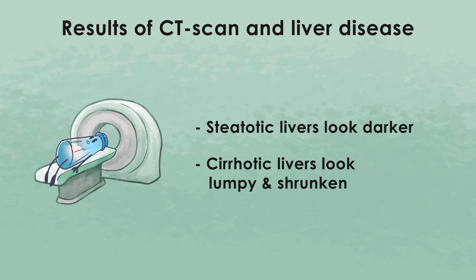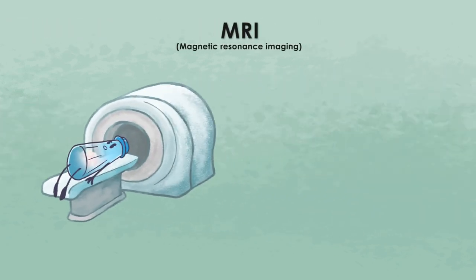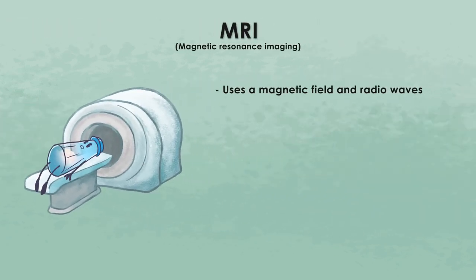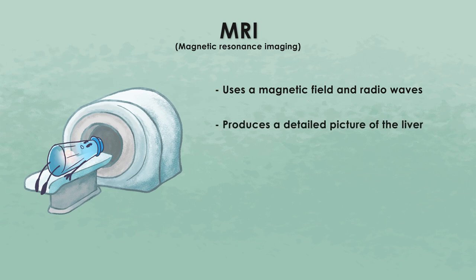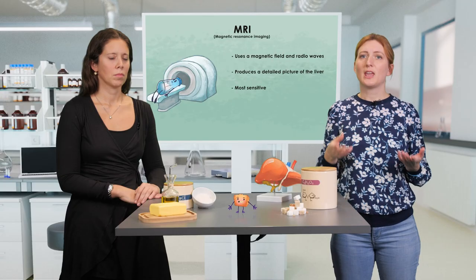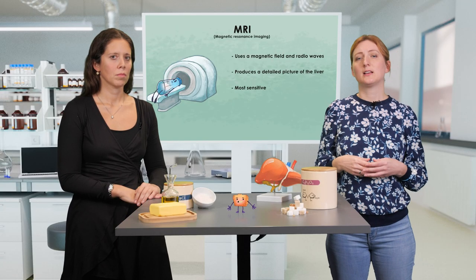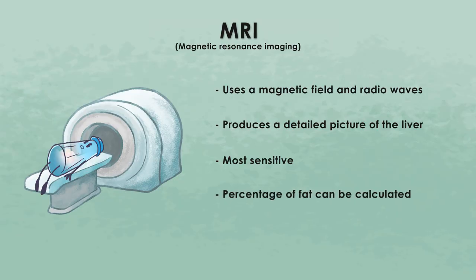MRI uses a magnetic field and radio waves to produce a detailed picture of the liver. MRI is the most sensitive imaging test for steatosis — it is highly accurate even in mild steatosis. Using MRI, a clinician can calculate the percentage of fat in the liver.